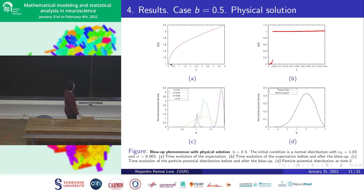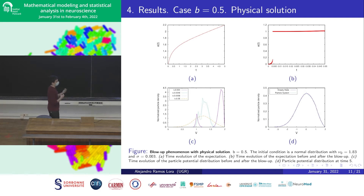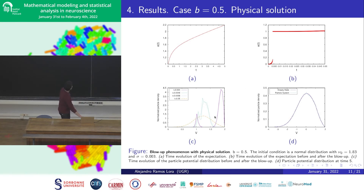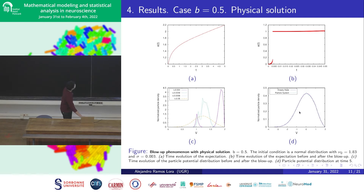For the first case — the low connectivity regime — where we know there is only one steady state, we can apply the notion of physical solution and continue the simulation after a discontinuity in the expectation. As you can see in the upper part, there is a discontinuity in the expectation, which means there is blow-up, but after the blow-up the value of the expectation is controlled. After the blow-up, all the neurons are reset and the system goes to the steady state, shown in yellow. The final picture shows a comparison between data from the simulation and the theoretical steady state of the Fokker-Planck equation, which are the same.